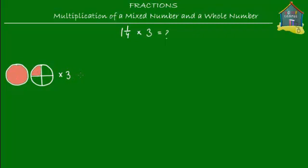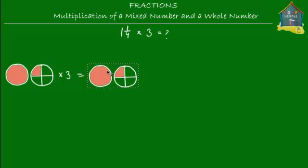I want to multiply 1 and a quarter pizzas by 3. But we can't eat a whole pizza as it is — we need to cut it up into slices. So what we do first is take all these pizzas and slice them up to make our life easy. The second pizza has already been cut up, so I only need to worry about the whole pizza. I cut it up into 4 slices, the same way as the second one.